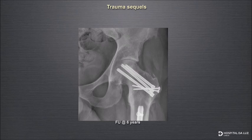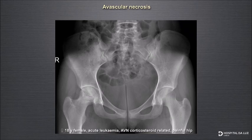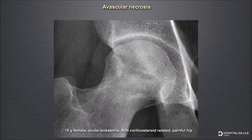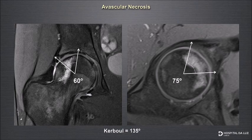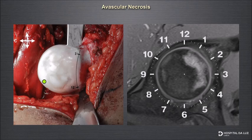This is a young female of 18 years old with AVN related to corticosteroid therapy for acute leukemia. There is collapse of the femoral head, and the MRI shows a quite large area of necrotic bone with partial collapse. The location is mainly anterior, the Kerboul angle is 135 degrees, and the necrotic area runs from 12 to 3 o'clock on the face-clock MRI.